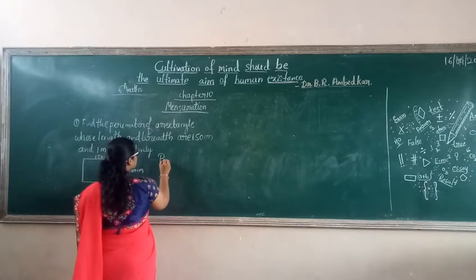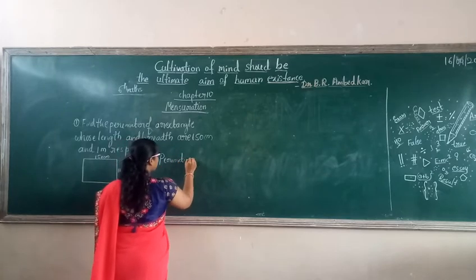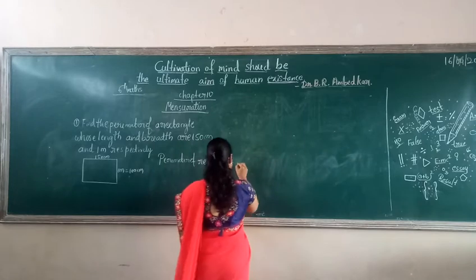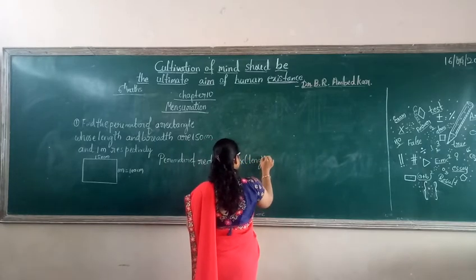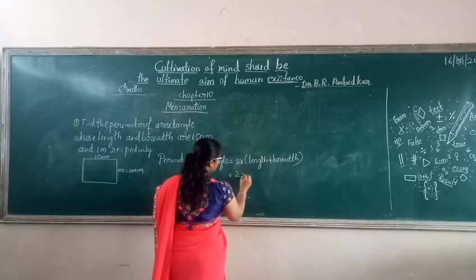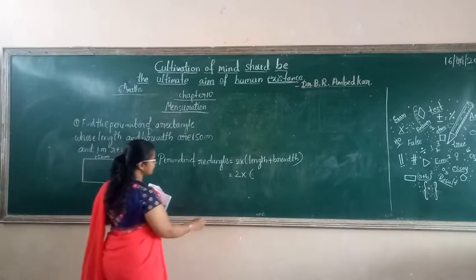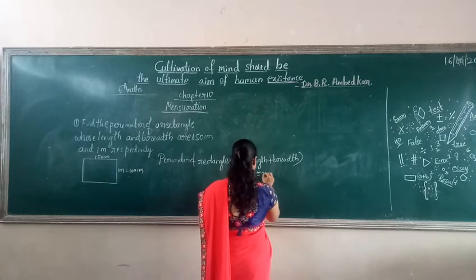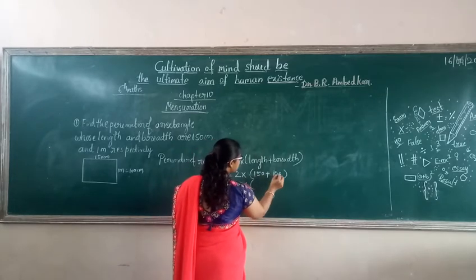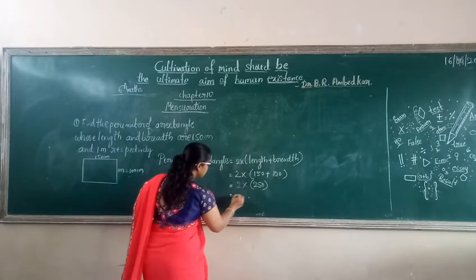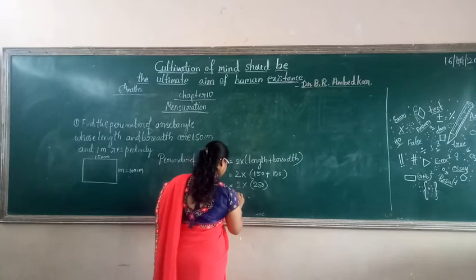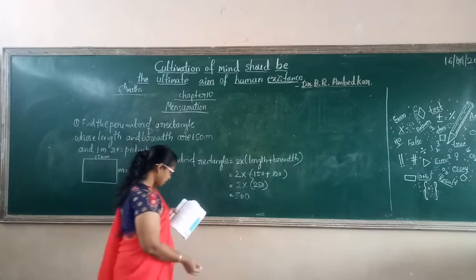Let's find out the perimeter of the rectangle. The formula is: perimeter equals 2 into (length plus breadth). Now, 2 into (150 plus 100) — that is 2 into 250. 250 into 2 is 500 centimetres.